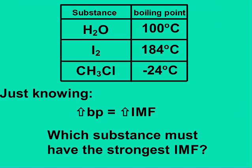So if we have some substances and their boiling points, just knowing that the higher the boiling point, the higher the IMF, we can deduce which one must have the strongest IMF. So which substance must have the strongest IMF: H2O, I2, or CH3Cl?